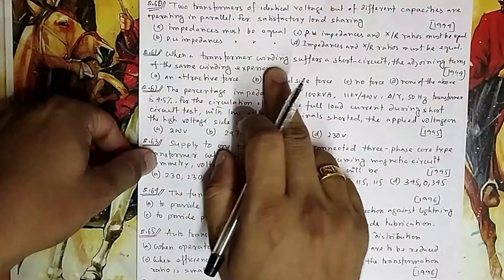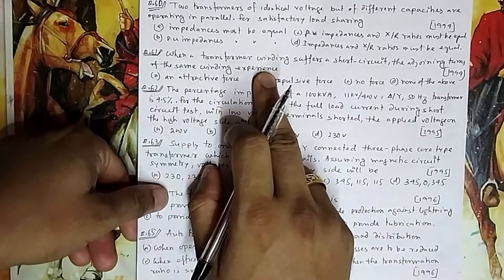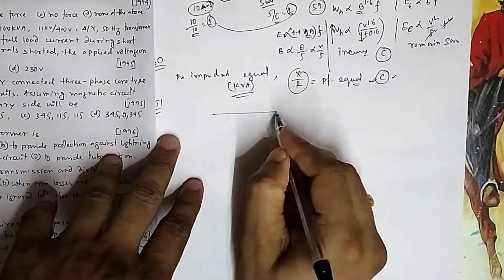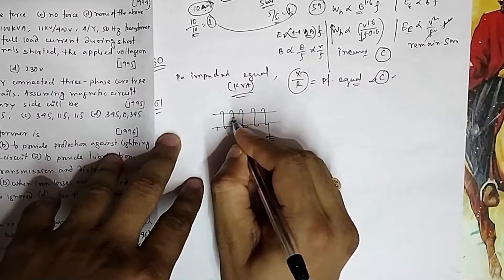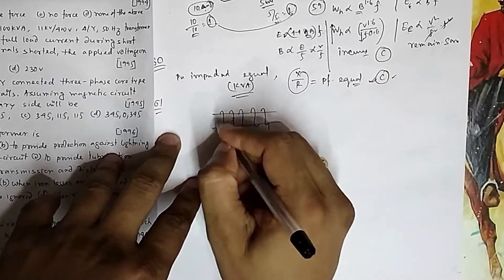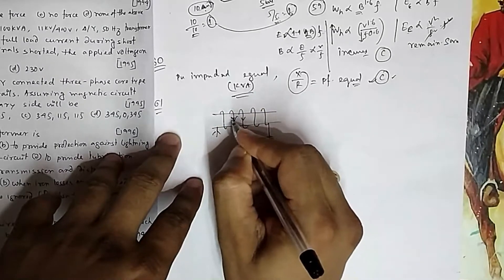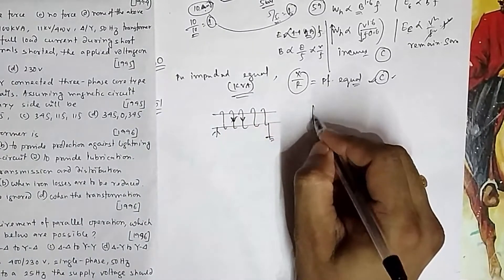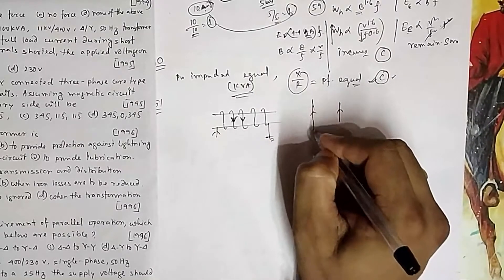Question 61: When a transformer winding suffers a short circuit, the adjoining turns of the same winding experience heavy current flow. Suppose this is my winding and it gets short circuited — the current flows in the same direction in these two adjacent windings. So these are like two parallel conductors with current in the same direction, meaning they will attract each other.